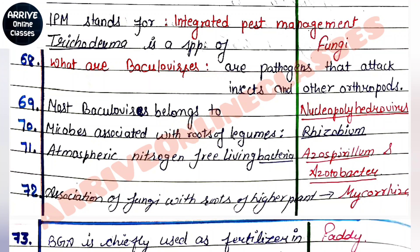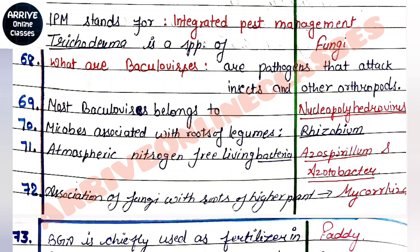IPM stands for Integrated Pest Management. Trichoderma is a species of fungi. Baculoviruses are pathogens that attack insects and arthropods. Most baculoviruses belong to the group Nucleopolyhedrovirus.